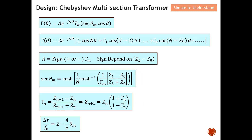These are all the formulas required to design this multi-section Chebyshev transformer. I will explain the first two formulas on the next slides, then cover the rest. In order to design this transformer you need all these formulas. In general, these equations are used together to find the reflection coefficients Γ₀, Γ₁, etc. I will show you how to use them on the next video, but let me give you the key ideas now.